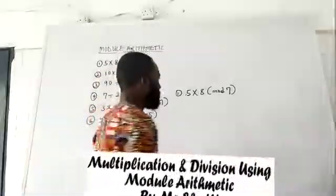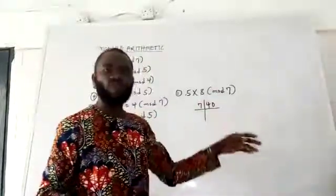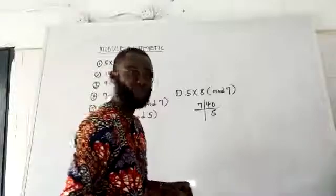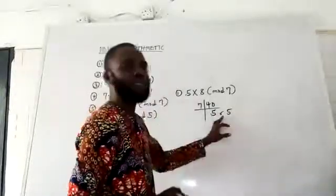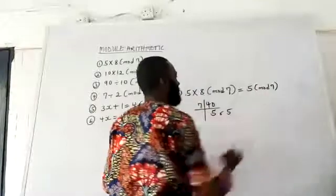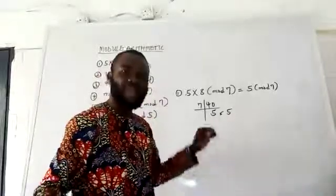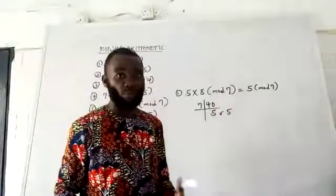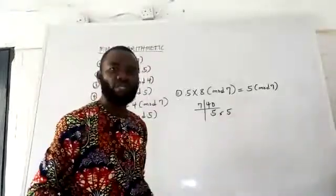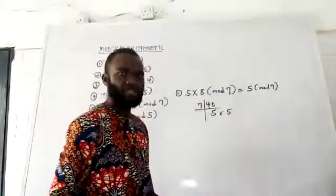5 multiplied by 8 is 40. My modulus is 7. So 7 into 40 — I'm going to have 5, because 5 times 7 is 35, leaving me with a remainder of 5. So if my remainder becomes my answer, therefore I'm going to have 5 in mod 7. If my answer equals or exceeds the modulus, I will take it back into the modulus, because in mod 7 there are only numbers 0 to 6. So 5 multiplied by 8 is 40, 7 into 40 gives remainder 5, and that remainder is the answer. It's as simple as that.